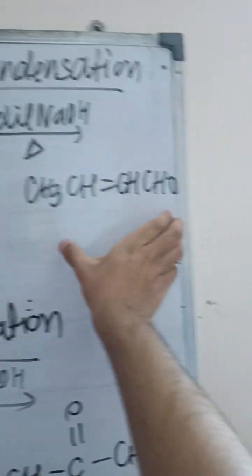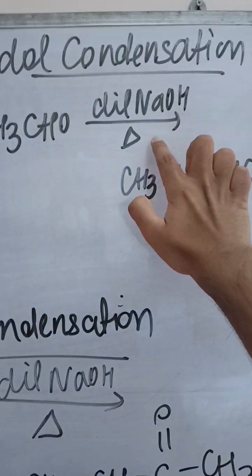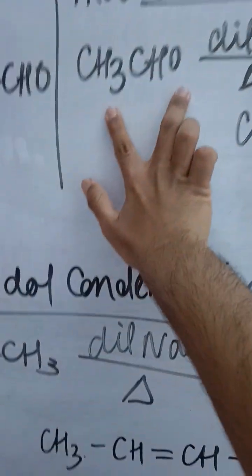In aldol condensation, they form unsaturated compounds with an aldehyde group in which dilute NaOH and heating is done to the aldehydes and ketones.